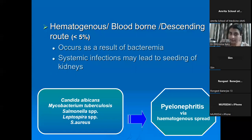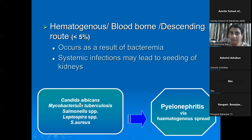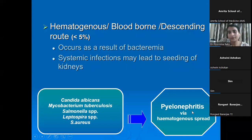The descending route or hematogenous route occurs as a result of bacteremia and the infection descends to the kidneys. The most common pathogens here are Candida albicans, Mycobacterium tuberculosis (renal TB), and very rarely Salmonella, Listeria, etc. Pyelonephritis is the most common manifestation of descending UTI.